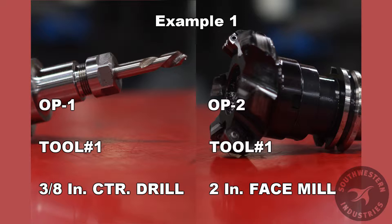Here are two examples. If we create a master program by combining two programs for Operation 1 and Operation 2, tool number 1 in the Operation 1 program is a 3/8 center drill. The problem is tool number 1 in the Operation 2 program is a 2-inch diameter face mill. We cannot have two different cutting tools with the same tool number.